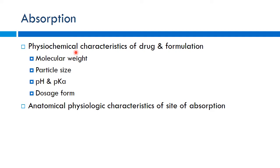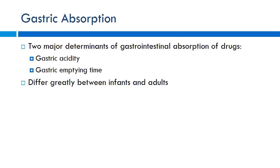The physiochemical properties affecting absorption include molecular weight — the larger the molecule, the harder it is to absorb — particle size, pH and pKa (going back to the Henderson-Hasselbalch equation), the dosage form being given (solution vs. tablet), and the route of administration. There are many differences that occur with young babies as they develop, particularly with gastric absorption, where the main determinants are gastric acidity and gastric emptying time.